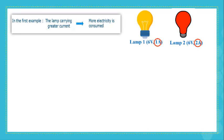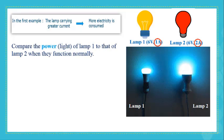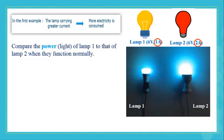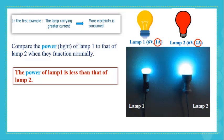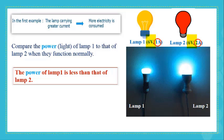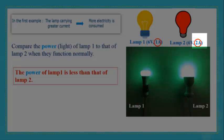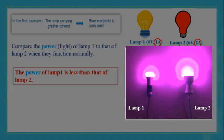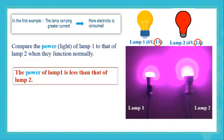In the first example, lamp 1 is glowing less than lamp 2, meaning the power of lamp 1 is less than that of lamp 2. Both lamps function normally under 6V, but lamp 2 carries 2 amperes — more than lamp 1 — and produces more light, indicating more electric power. So, the more the current carried by an electric device, the more the electricity consumed, which means the more the electric power.